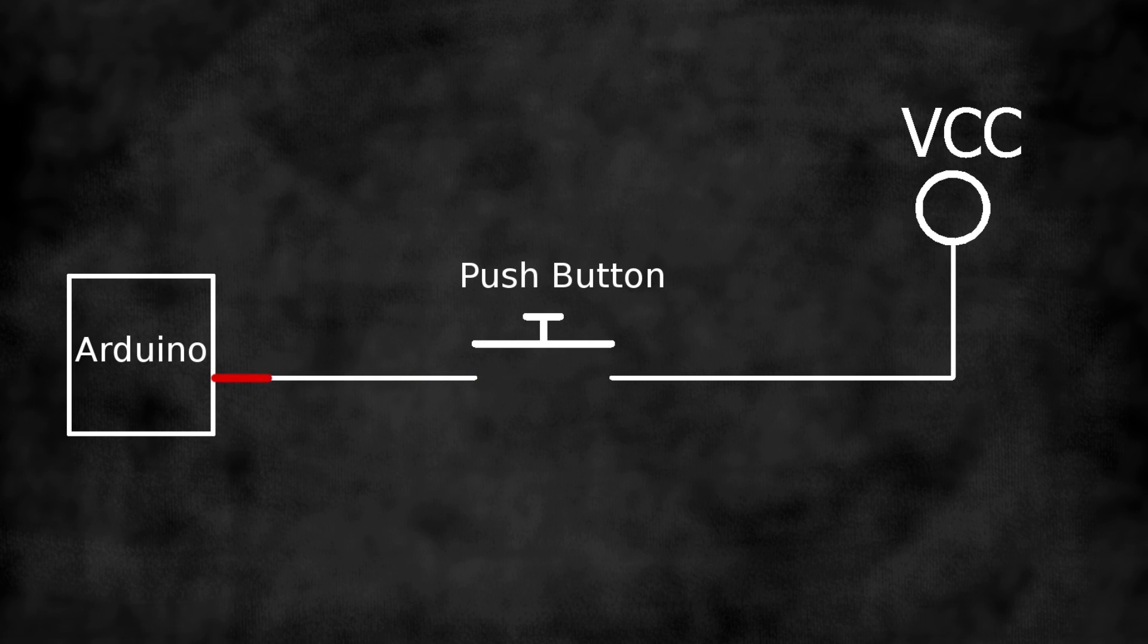One way to solve this is to also connect pin 3 to ground. This way, when the button is not pressed, electricity will flow from the ground to the Arduino, which will be read as a low signal. But the problem now is that when you press it, you just short-circuited everything by connecting the ground directly to VCC, probably damaging a circuit.